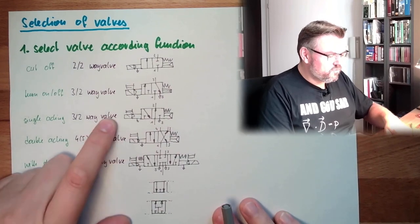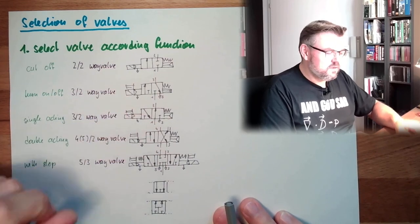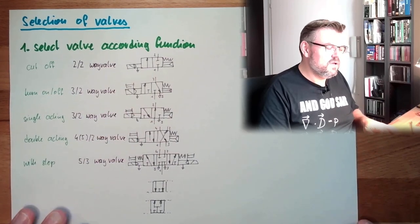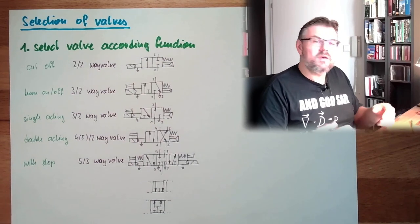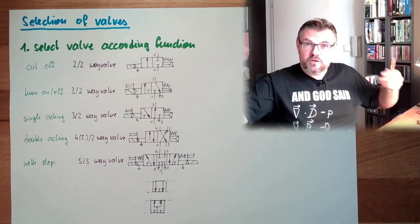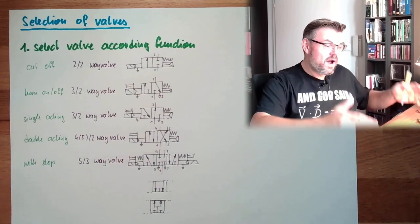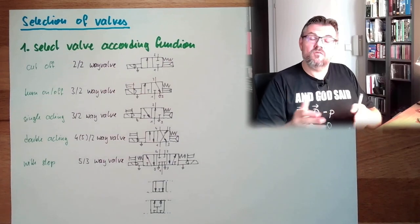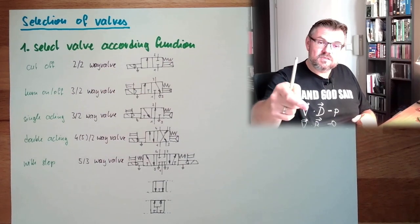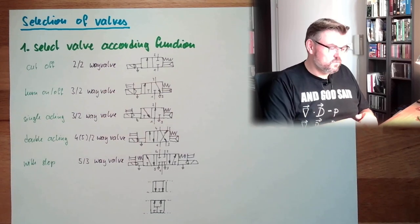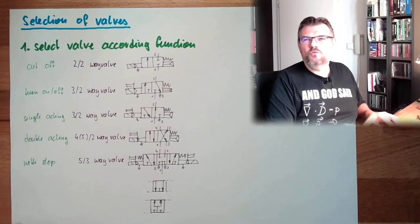I also draw everywhere a hand manual operation. Because this is pretty usual, that we can control the valves manually as well. Because you know, during commissioning, when the control system is not ready yet, not ready wired and so on, and you want to check already the function, it is really nice if you can just press it a little.